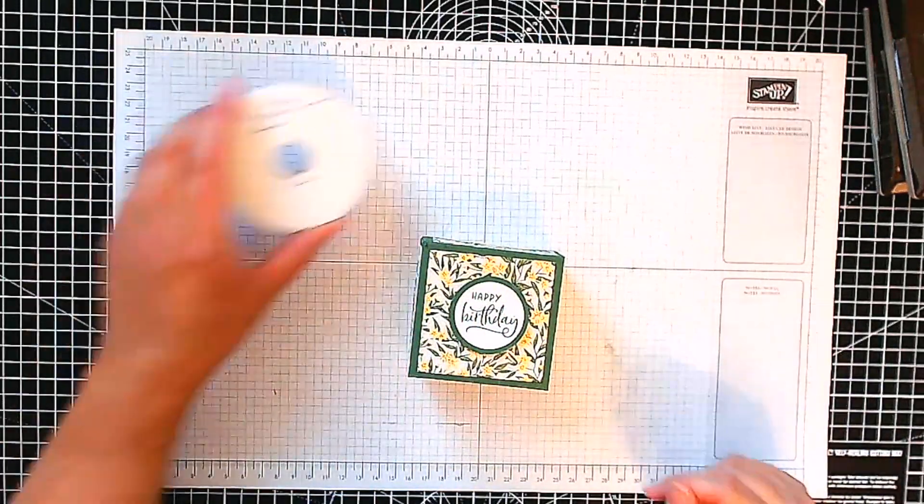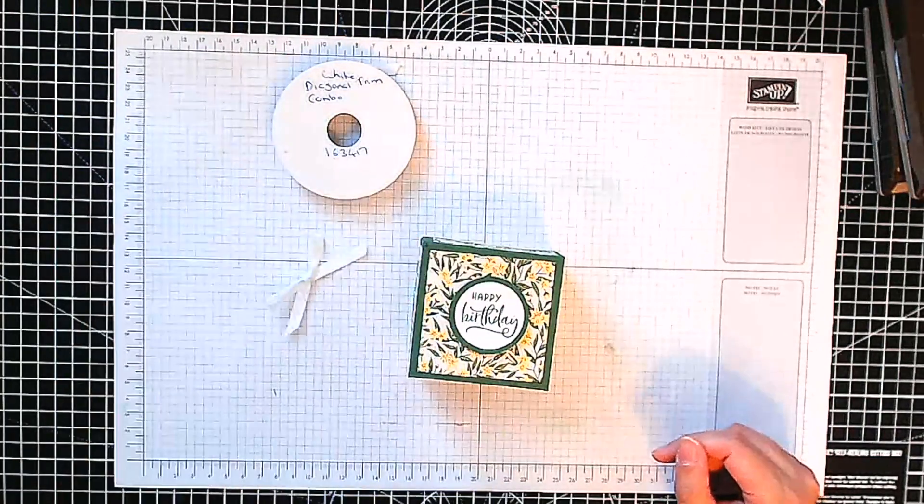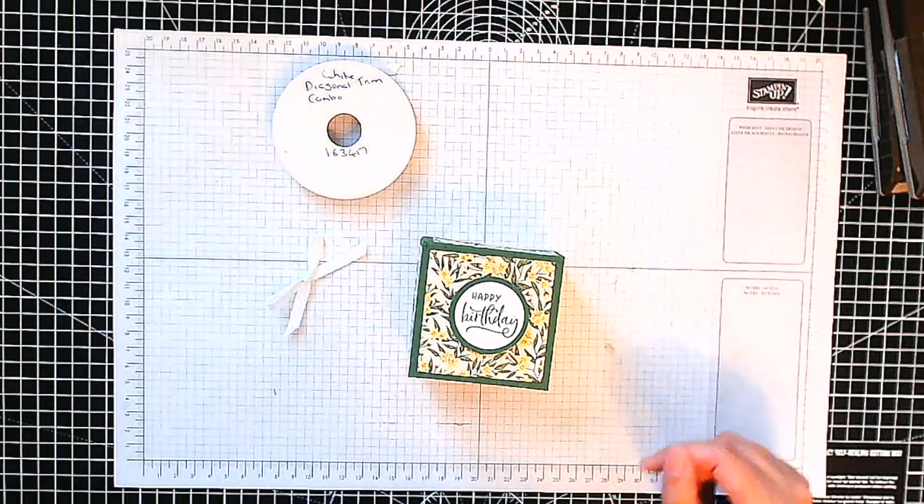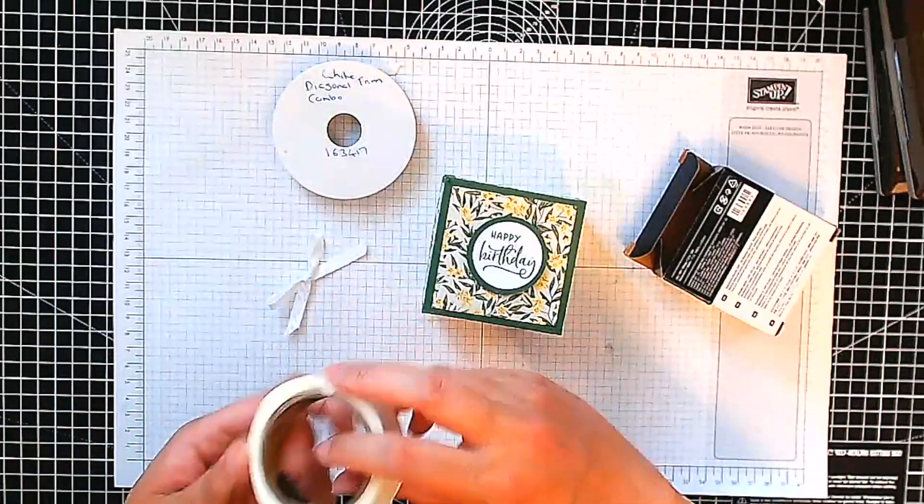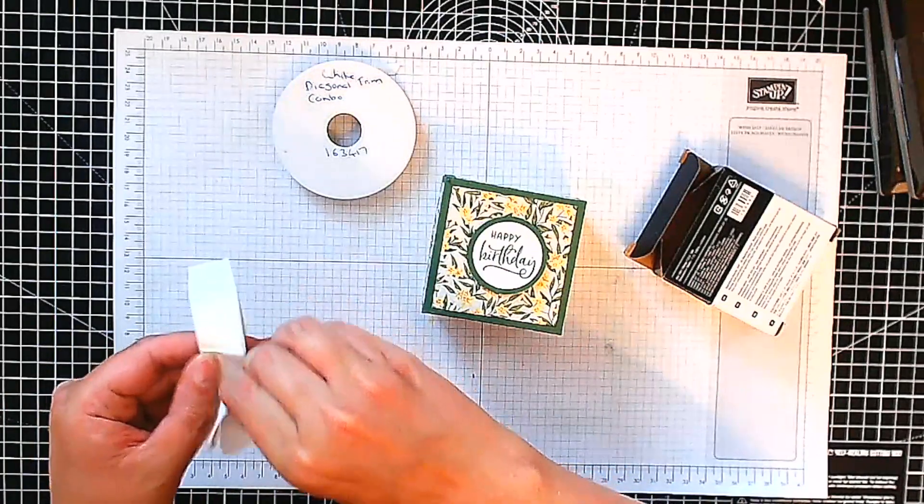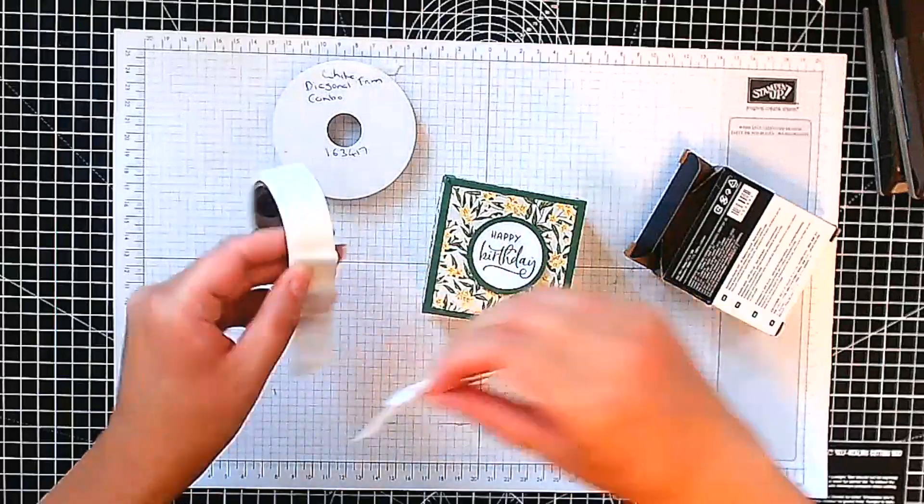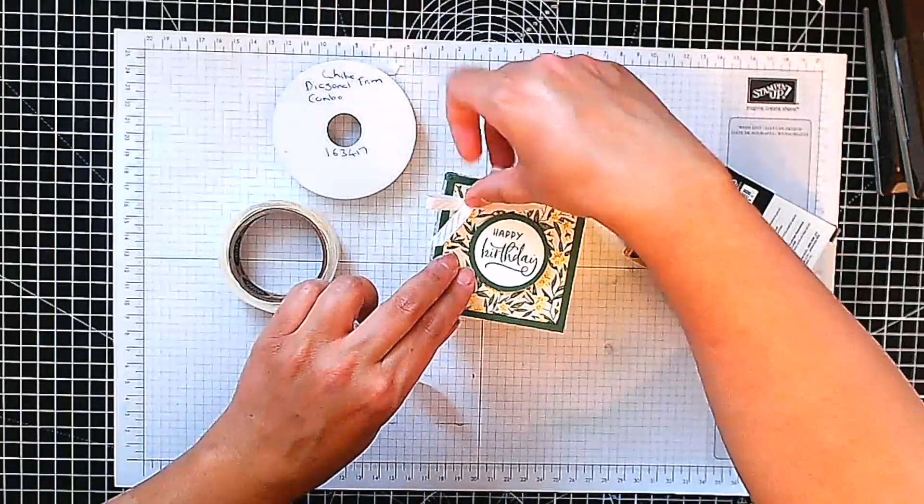And I've used some little white diagonal trim ribbon to make a bow. It didn't force you to see me struggling to make a bow. I'm going to stick this down here just with some glue dots. I'm just going to put that there in the corner.